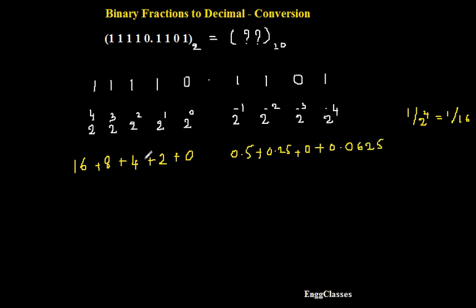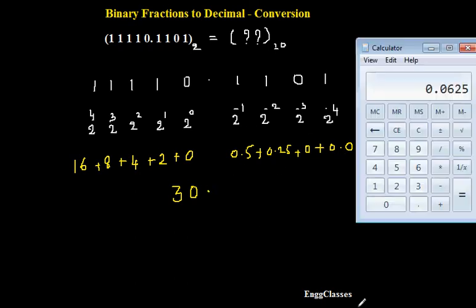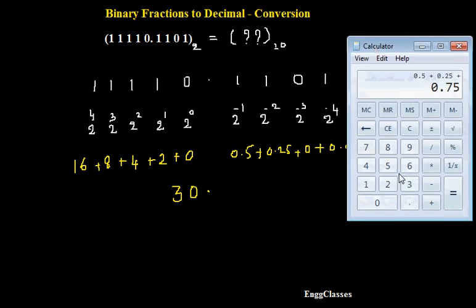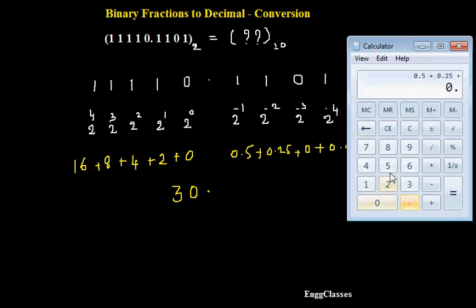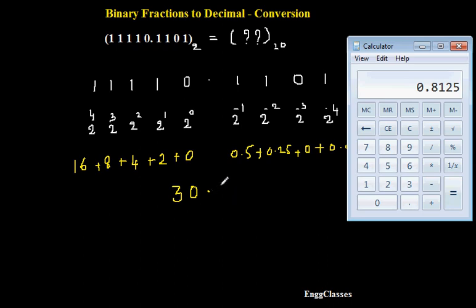So what is this number going to be? Just I have to add them up. 16 plus 8 is 24, 24 plus 4 is 28, 28 plus 2 is 30. So integer part is going to be 30 point this fractional part. I need to add up all those final numbers. Let me consider the calculator. First number is 0.5 plus 0.25, that is going to get 0.8125. So the number is 30.8125 in decimal.